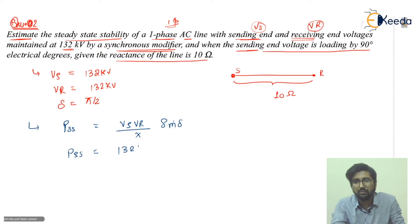So what is the Pss? That is 132 into 132, and it is in kV so that will be 10 to the power 6, and this is X, this value is 10, and this is sine delta. Sine delta is actually 1.